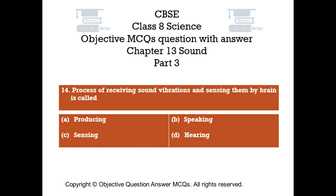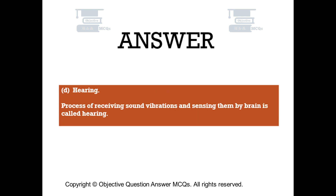Question number 14. Process of receiving sound vibrations and sensing them by brain is called: Option A – producing. Option B – speaking. Option C – sensing. Option D – hearing. The right answer is option D. The process of receiving sound vibrations and sensing them by brain is called hearing.